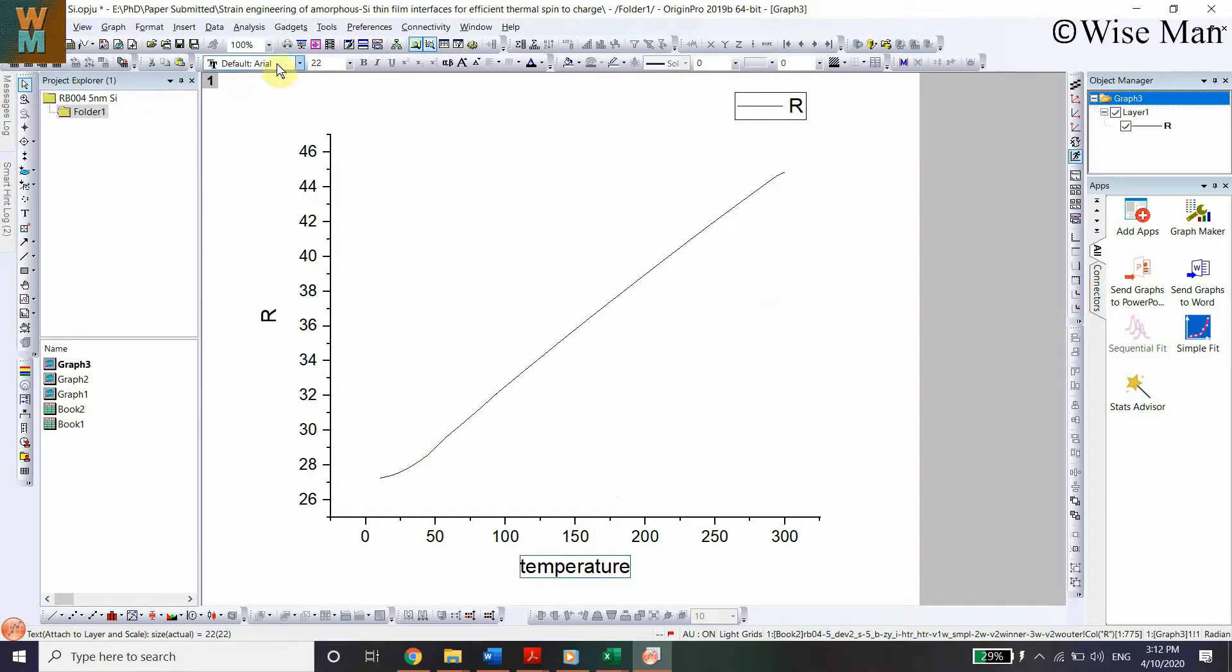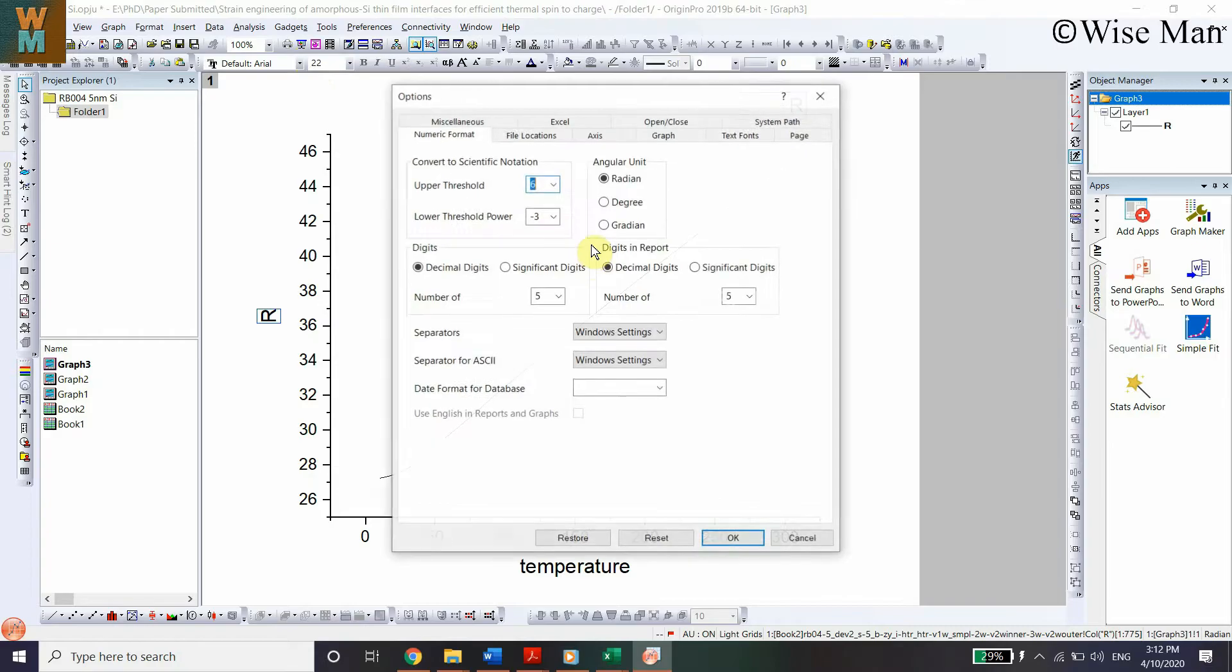Let's change this font to Times New Roman as a default. For that, go to Preference, go to Options, and then go to Text Fonts. You can see Text Tool on the bottom side.